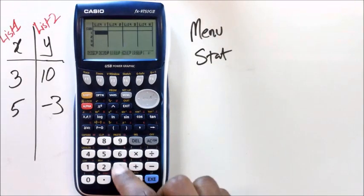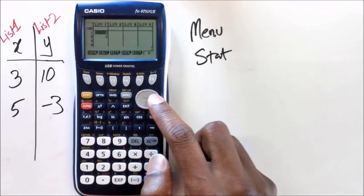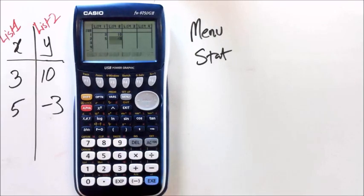So we're going to put in 3 and 5 because those are our two x values, and then in list 2 we're going to put our y values which is 10 and negative 3.